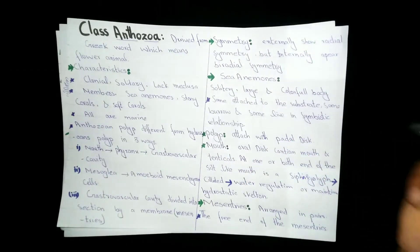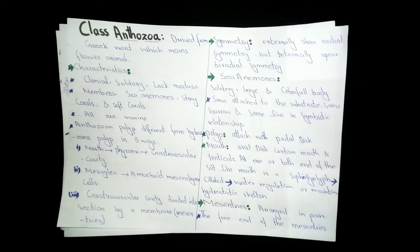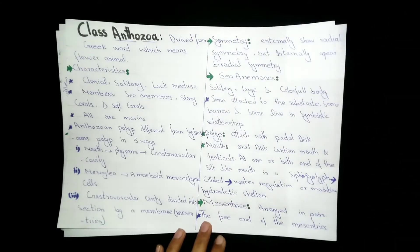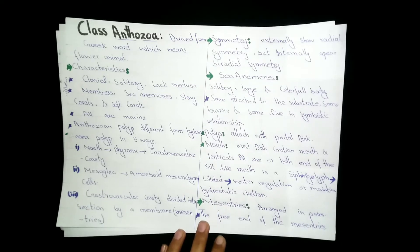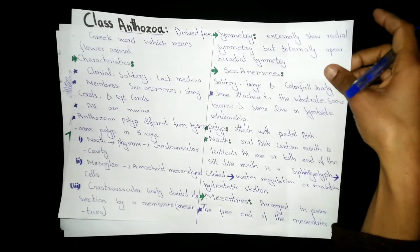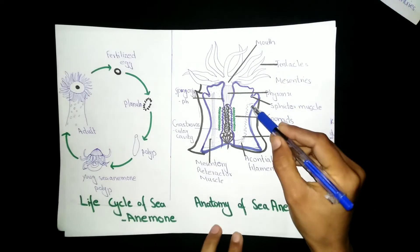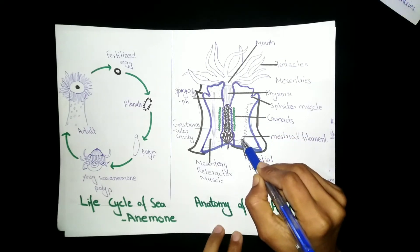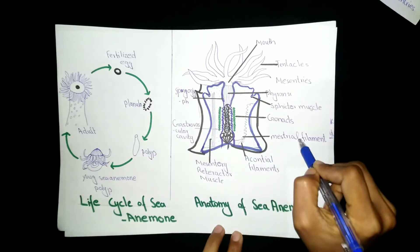Next are mesenteries. Mesenteries are arranged in pairs in the body. Externally, they are attached to the body wall. Internally, they are attached to the pharynx. Their free ends are called mesentrial filaments.